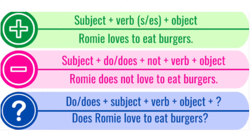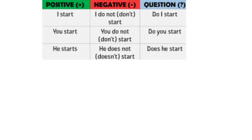For questions: do or does plus subject plus verb plus object plus question mark. Example: Does Romy love to eat burgers? In positive we say 'I start,' in negative 'I do not start,' in question 'Do I start?' For 'you': positive 'you start,' negative 'you do not start,' question 'do you start?' For 'he': positive 'he starts,' negative 'he does not start,' question 'does he start?'